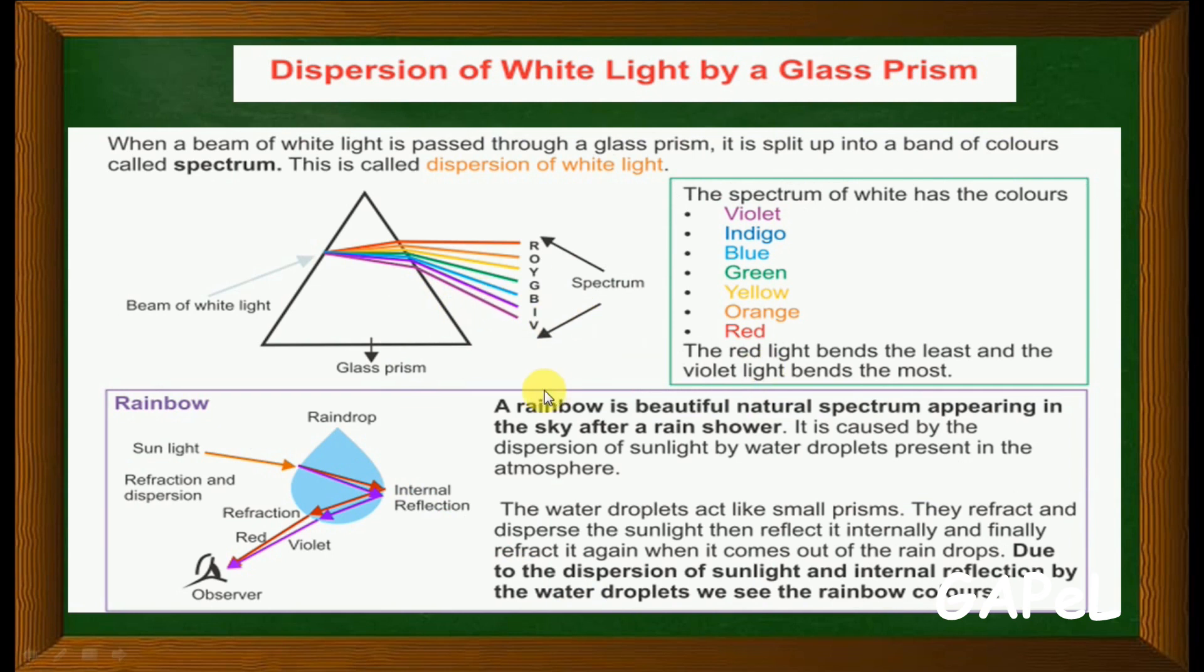This is the spectrum. It is same like the raindrop. The water droplet acts like a prism. When sunlight incidents on this point it will refract. A rainbow is a beautiful natural spectrum appearing in the sky after a rain shower. It is caused by the dispersion of sunlight by water droplets present in the atmosphere. The water droplet acts like a small prism.